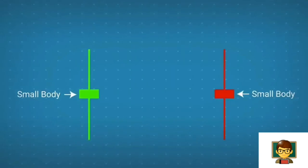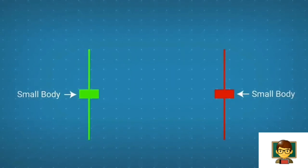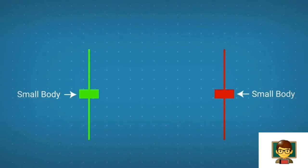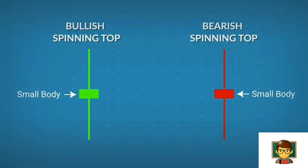If a candlestick has a short body positioned in the middle, that means a struggle between the bulls and the bears. Such a pattern is known as a spinning top.